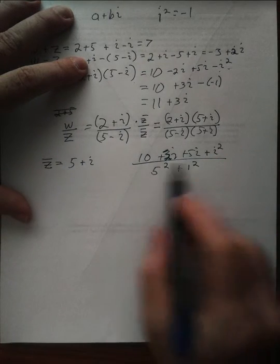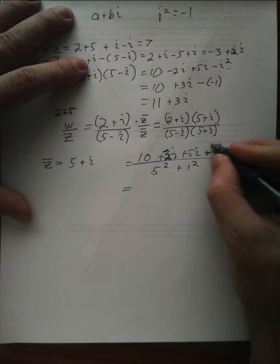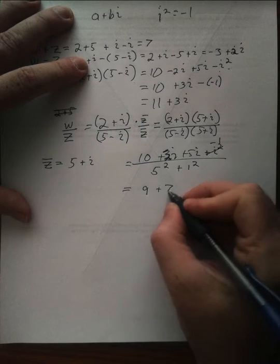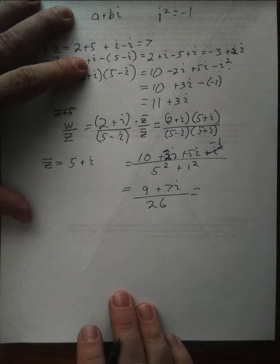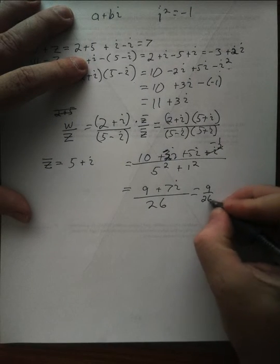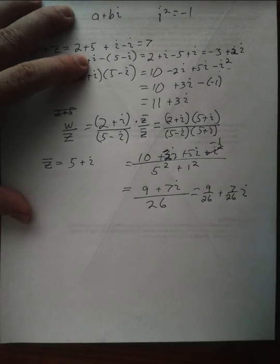So I'm going to simplify a little bit here. This is going to be minus 1. 10 minus 1 is 9 plus 7i over 26. And then to write it in the form A plus Bi, it's going to be 9 over 26 plus 7 over 26i.